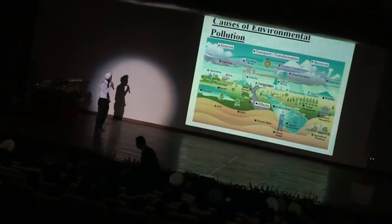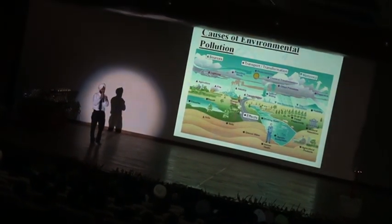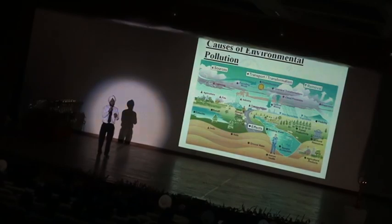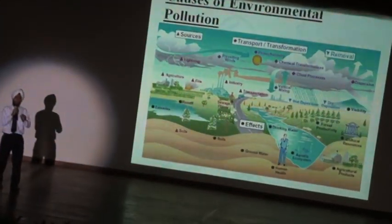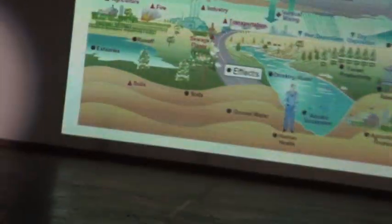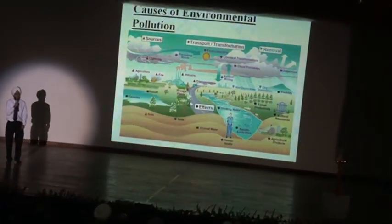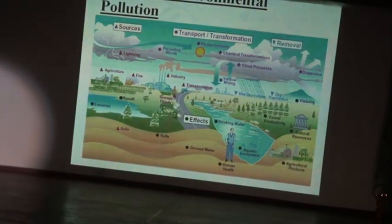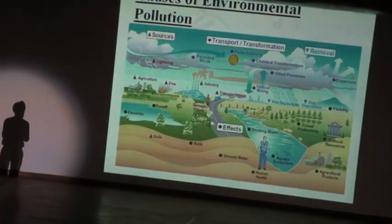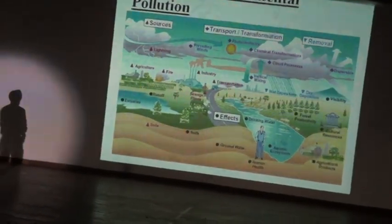Causes of environment pollution: if I could summarize this whole diagram in one sentence, the way we are affecting the environment is really a horrifying effect. I was having a discussion with my environment teacher. He told me the way we are affecting the environment, the ozone layer would be depleted. He also asked what we would say to our grandchildren given the way we are affecting the environment.